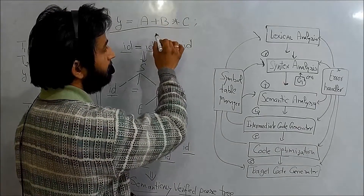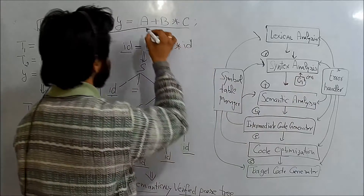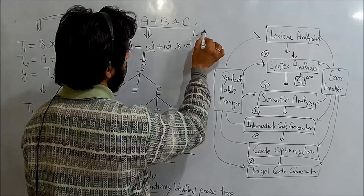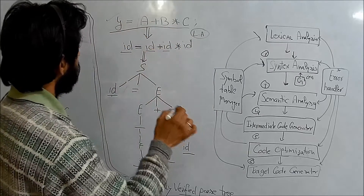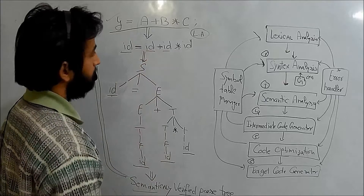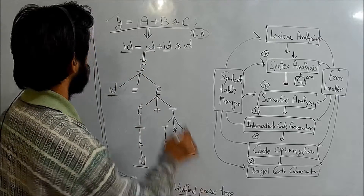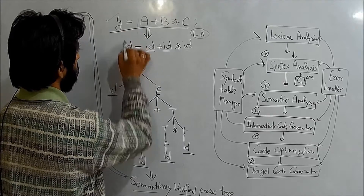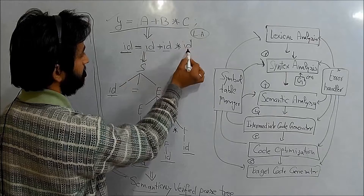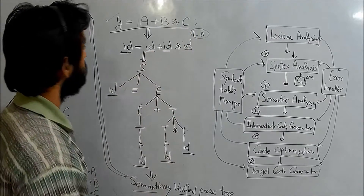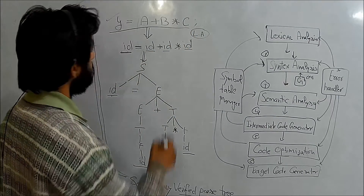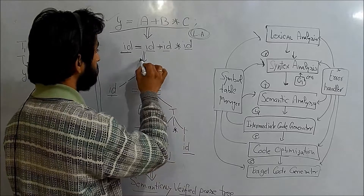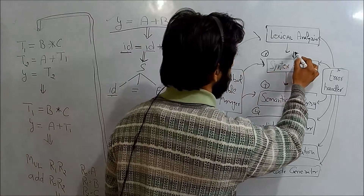When we feed this code to our lexical analyzer, the lexical analyzer will take this code and convert it into a stream of tokens. Here I will get tokens: id for y, id for a, id for b, id for c, and the operators remain as they are. This is the stream of tokens obtained from the lexical analyzer.